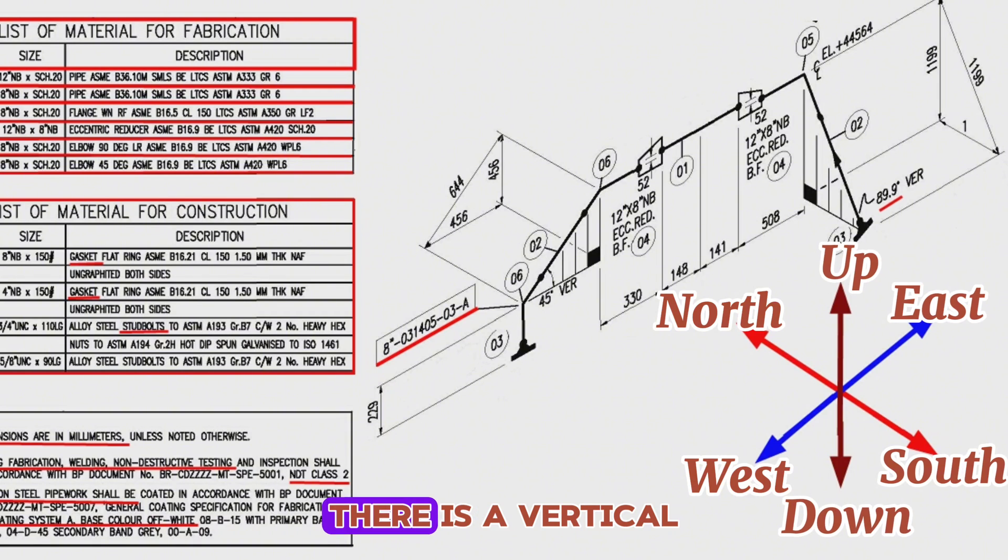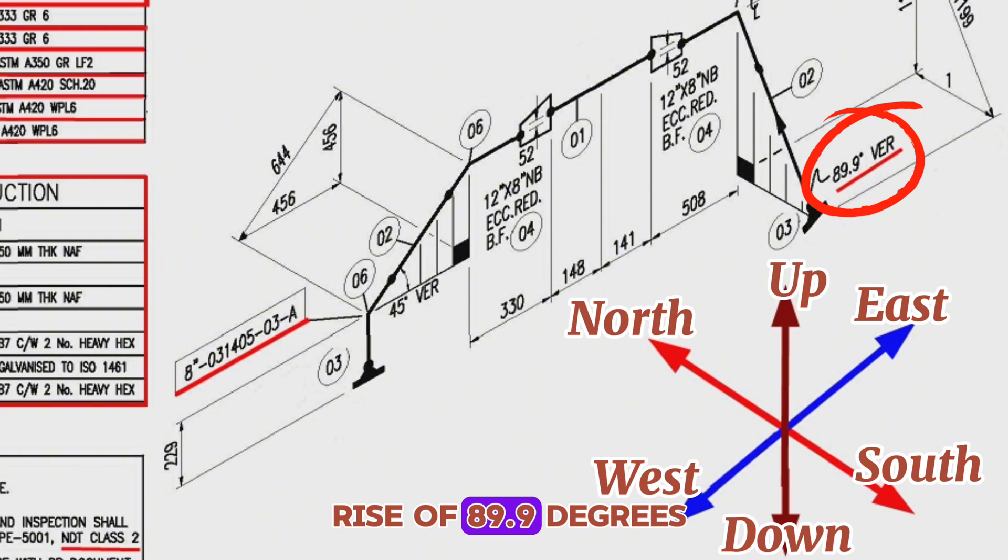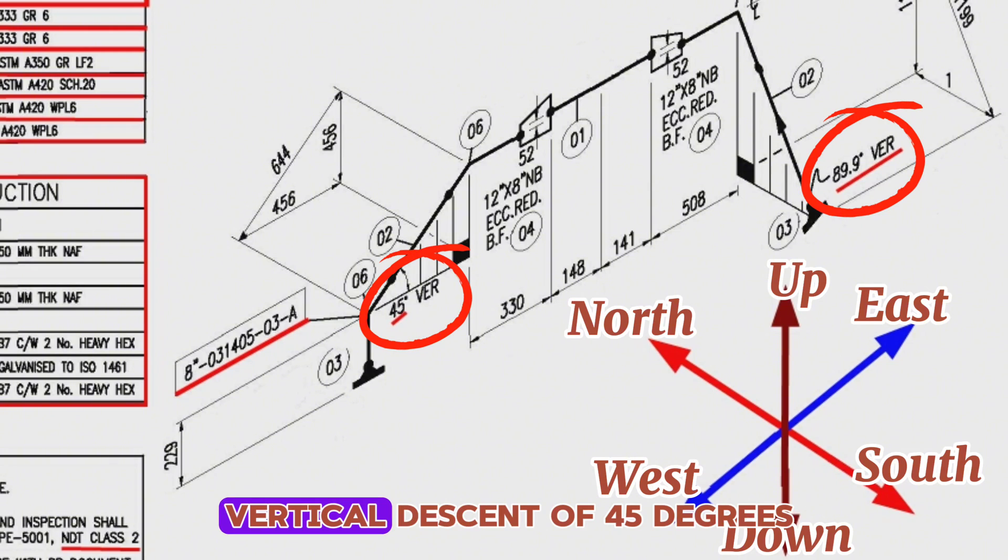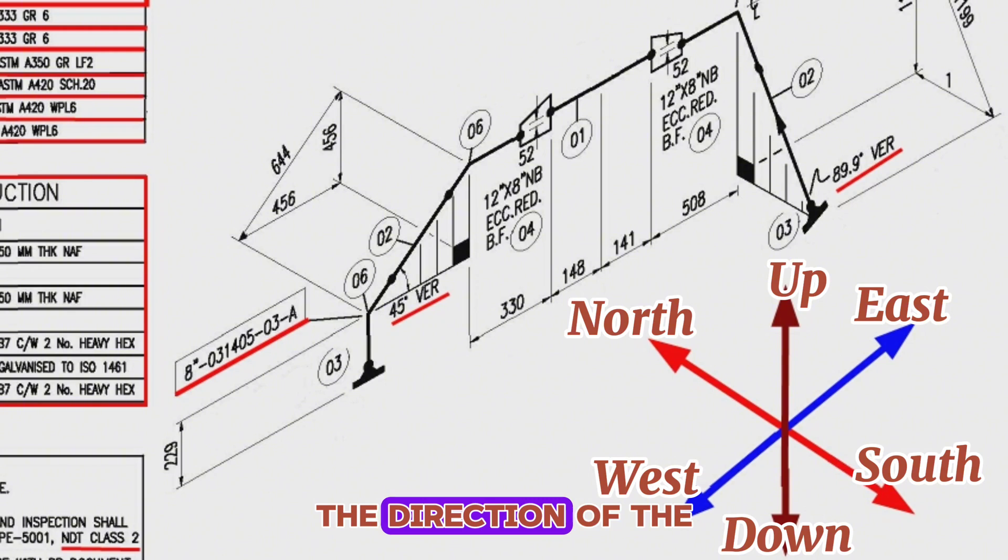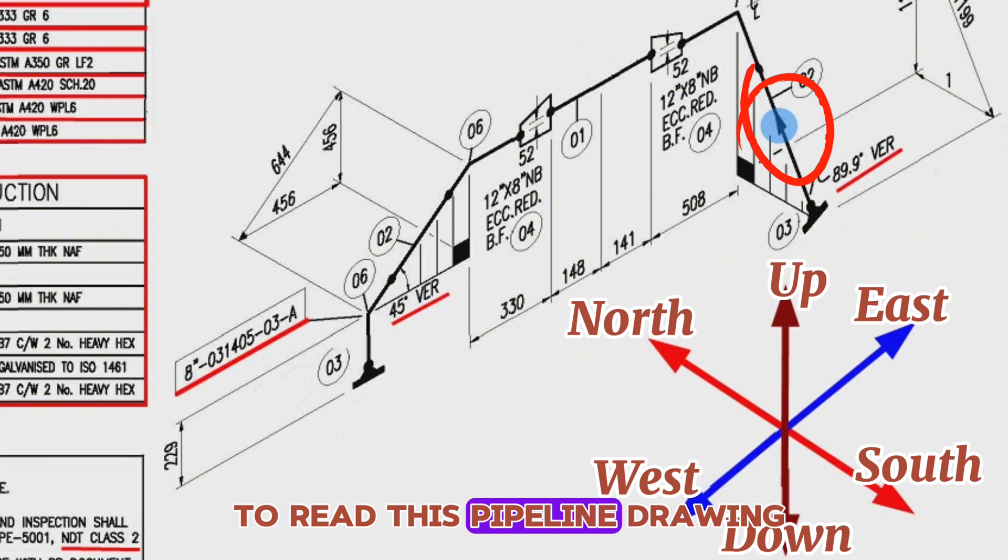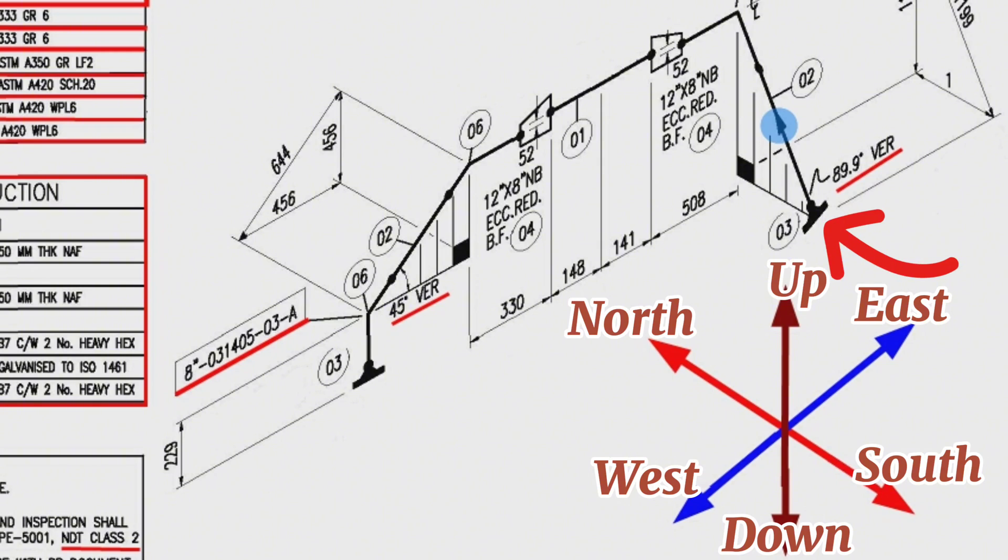In the pipeline, there is a vertical rise of 89.9 degrees and there is a vertical descent of 45 degrees. The direction of the pipeline is shown here, so we will start to read this pipeline drawing from this point. The pipeline starts from this flange to northwards, then raised upwards at angle 89.9 degrees.